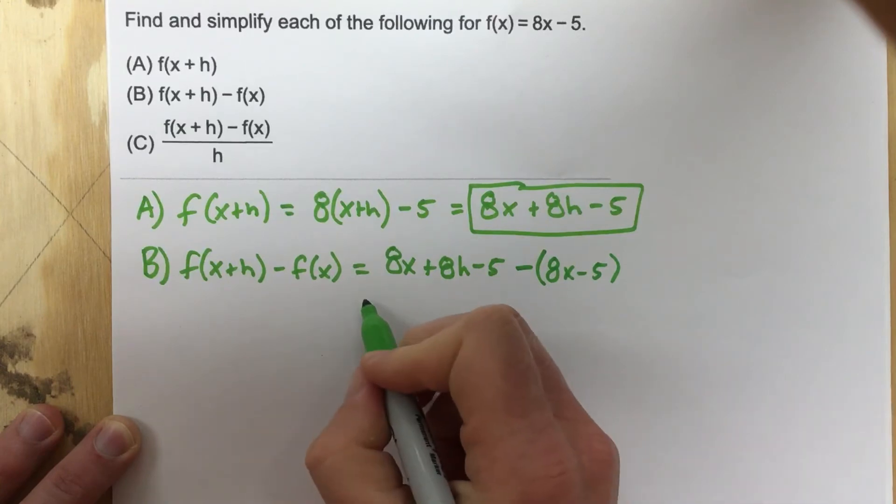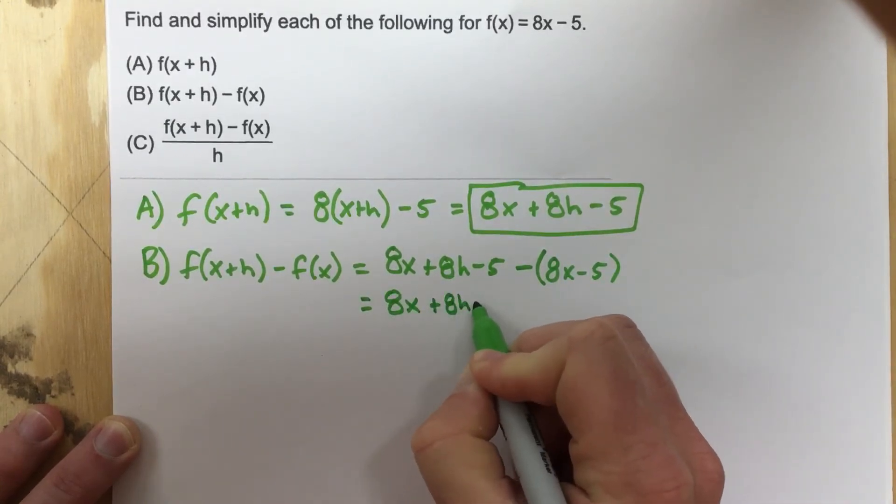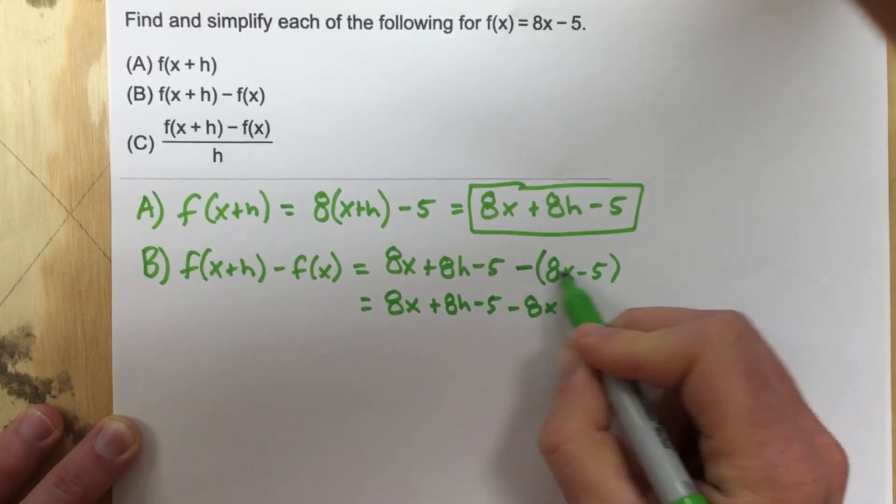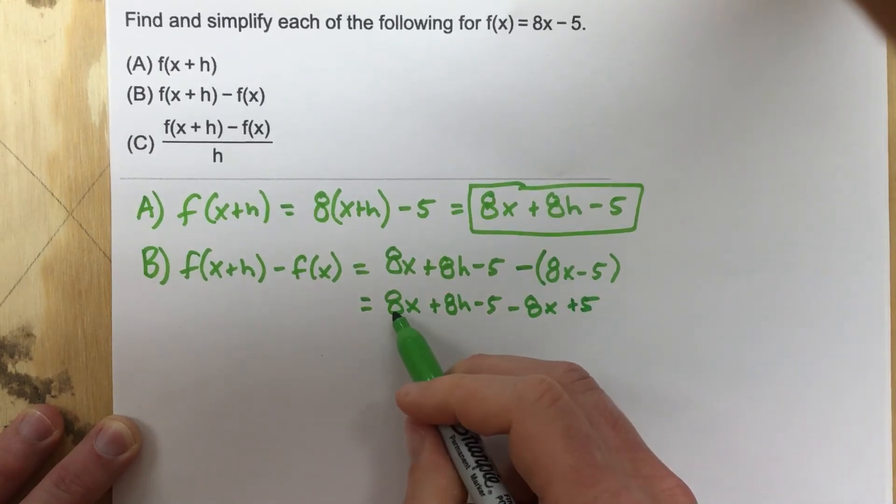Now we have some simplifying that we can do here because we're going to say 8x plus 8h minus 5 minus 8x. And then to distribute the negative to the other negative, we get plus 5. So you can see the 8x and the negative 8x cancel, the negative 5 and the 5 cancel.